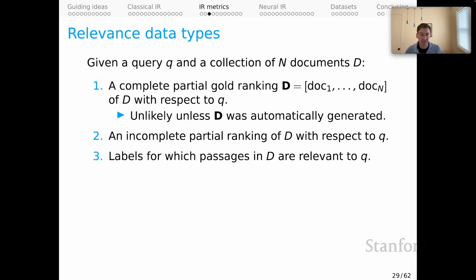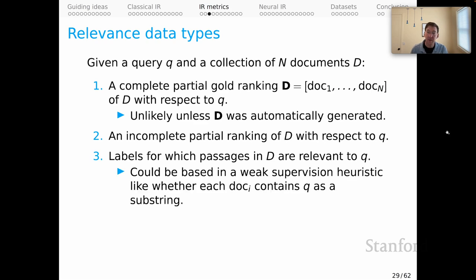Another common kind of labeling in this space is to simply have binary judgments for whether or not documents in our corpus are relevant or not to the given query. That's very common to see. This could be based on human labeling, but it could also be based on a weak supervision heuristic. For example, whether each document contains the query that we're interested in as a substring. That would obviously be very noisy, but we found in practice that that kind of weak supervision heuristic can be powerful when it comes to training good IR systems.